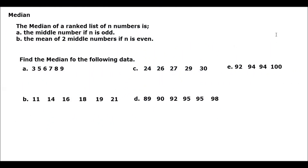To continue our discussion, we have another topic for your Math 1, Mathematics in the Modern World. This is Chapter 4, Measures of Central Tendency. Our topic for today is median. The median of a rank list of N numbers is: A, the middle number if N is odd; and B, the mean of the two middle numbers if N is even.